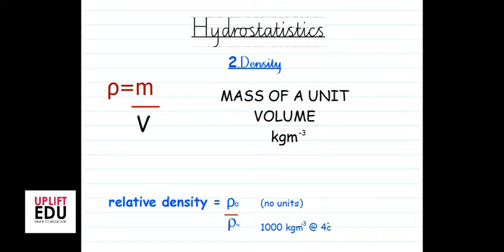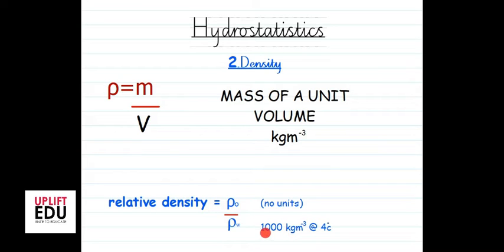The next concept in density is relative density. Relative density is a comparative quantity — it compares the density of an object with the density of water at four degrees Celsius. An important point to remember: when you encounter a relative quantity, it will never have a unit.